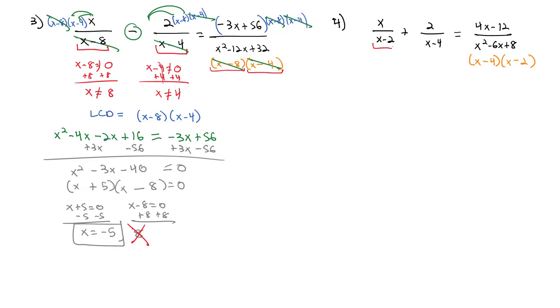Looking for the unallowed values, x minus 2 cannot be equal to 0. So if I add 2 to both sides, x cannot be 2. The second one, x minus 4, also cannot be equal to 0. So if I add 4 to both sides, x cannot be equal to 4. And in orange over here on the right, those are both repeated, so we don't have to do them again. We know the bad values are 2 and 4.